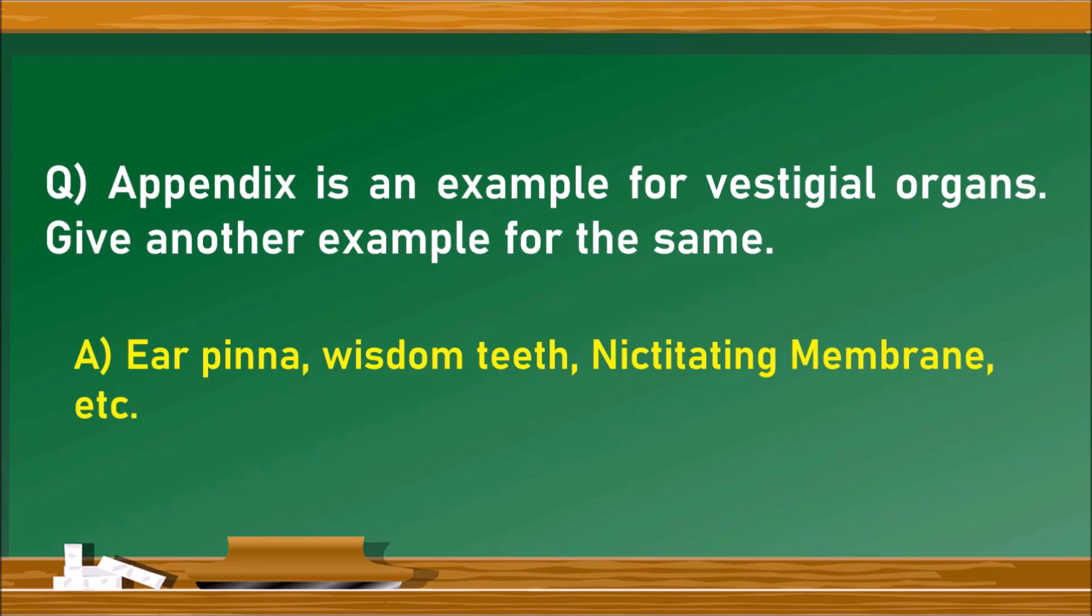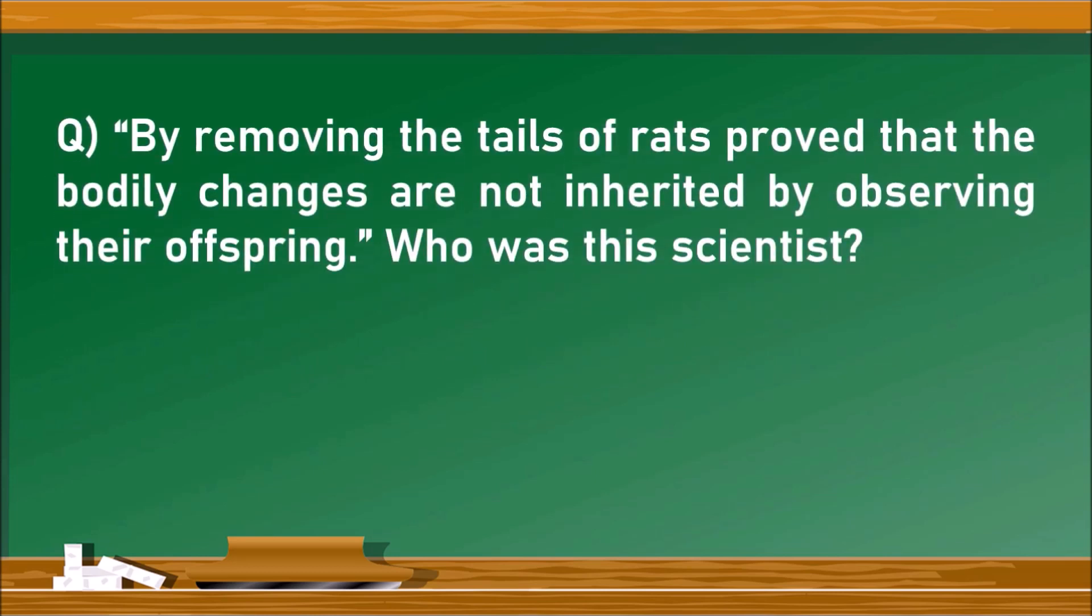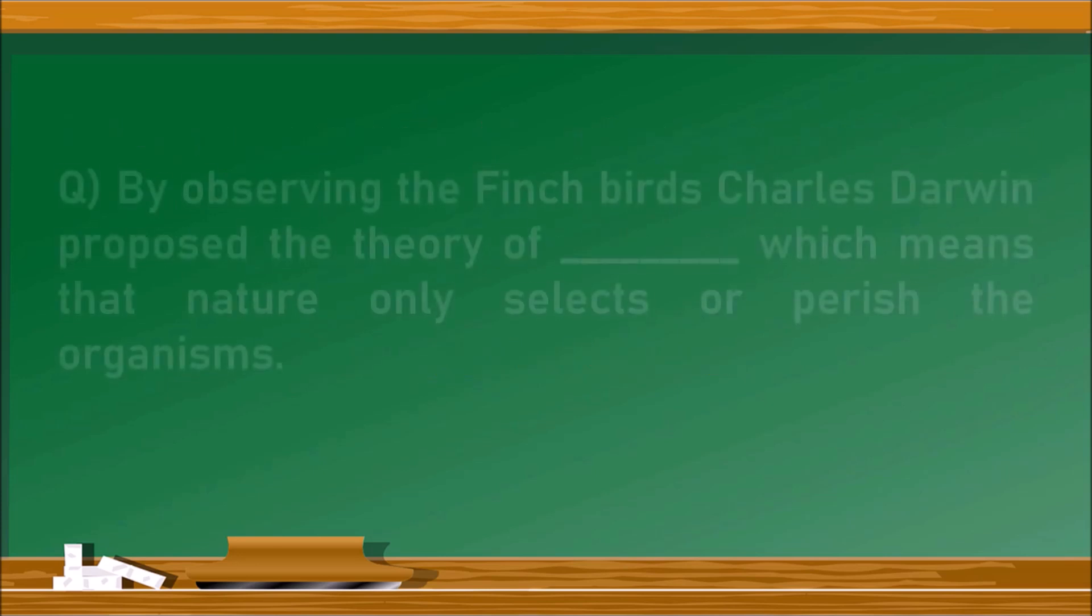Next question: By removing the tails of rats and observing their offspring, which scientist proved that bodily changes are not inherited? The answer is August Weismann. By condemning Lamarckism, he proved and proposed this theory.